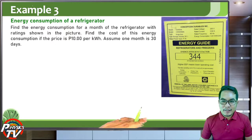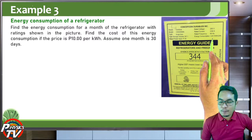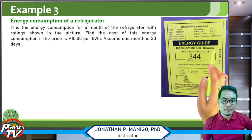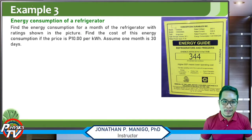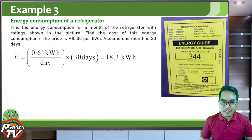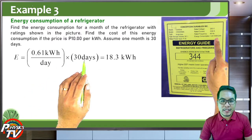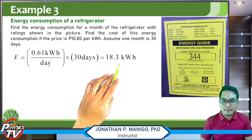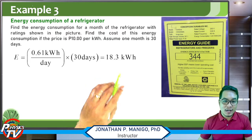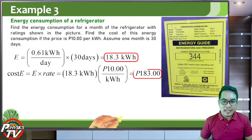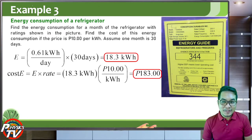Another example: a refrigerator with a rated power input of 71 watts but an energy consumption of only 0.61 kilowatt-hours per 24 hours — which represents the average power. Assuming an energy cost of 10 pesos per kilowatt-hour, the monthly energy consumption is 0.61 kilowatt-hours per day times 30 days equals 18.3 kilowatt-hours. The monthly cost is therefore 18.3 times 10 pesos, which equals 183 pesos.